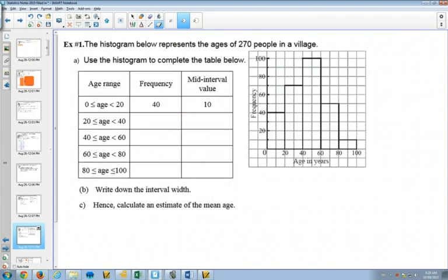So, here is our first example. We've got a histogram, and we've got frequencies there for ages of 270 people in a village. So, the first thing here is, are we able to interpret the data? So, between the ages of 0 and 20, the mid value there is 10, and the frequency is 40.